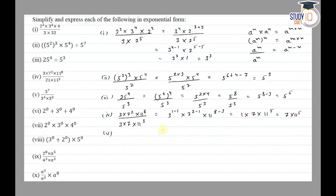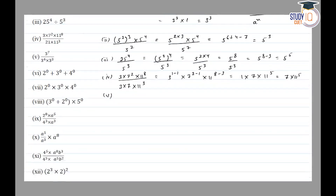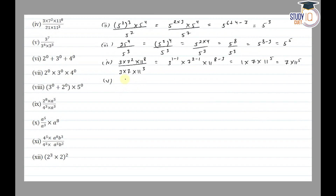The fifth part is: 3 raised to the power 7, upon 3 raised to the power 4 into 3 raised to the power 3. This equals 3 to the power 7 — dividing means subtracting powers — minus 4 minus 3, equal to 3 raised to the power 7 minus 7, equal to 3 raised to the power 0, which equals 1.